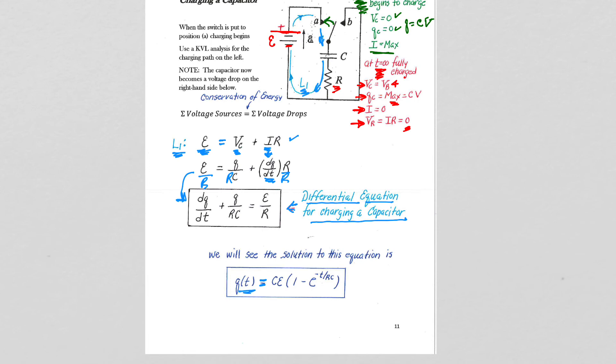And so when we're taking a look at the solution, what we're saying is that when we plug this in for q and we take the derivative of this and plug this in here, we will get that equal to epsilon divided by R.